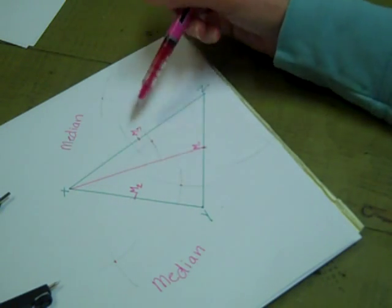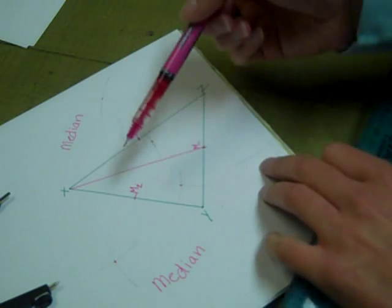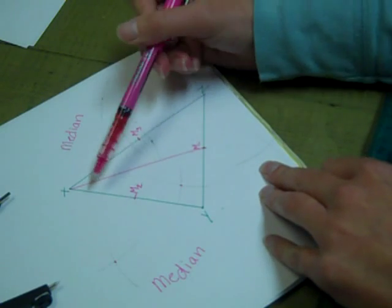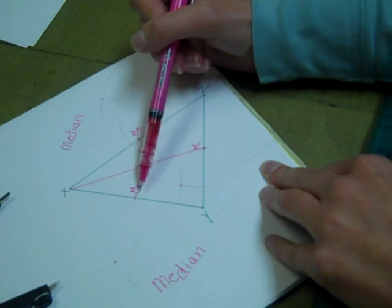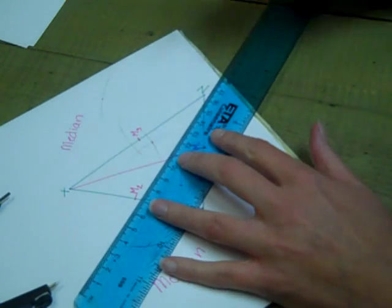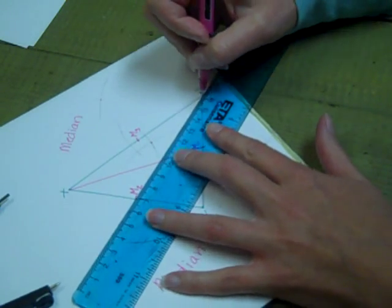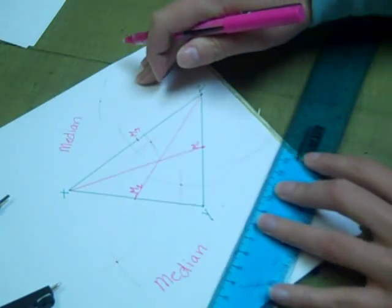There's three medians to a triangle, for each triangle. So I can take my second midpoint that I created, which was on XY, and if I connect that to the angle across from it, which is angle Z, that would create my second midpoint.